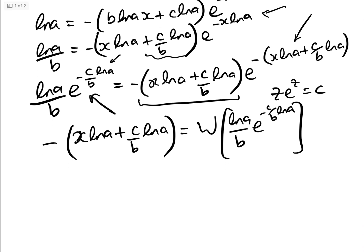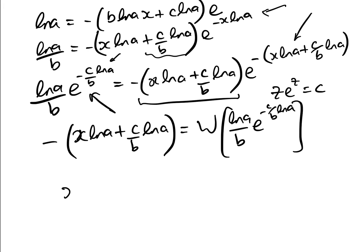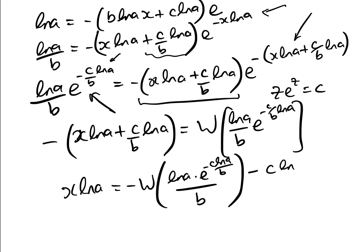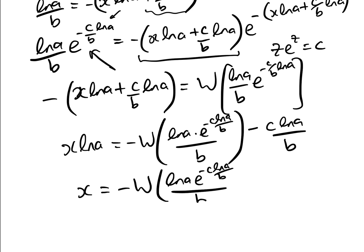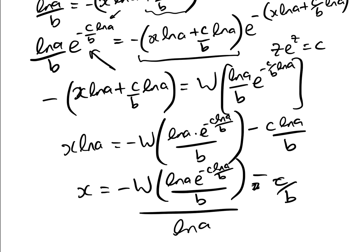We can simply read off our answer because we've got it in the form z e to the z equals c. Therefore, minus brackets x log a plus c over b log a equals W of log a over b times e to the minus c over b log a. Getting rid of the minus sign and dividing by log a, our answer is x equals minus W of log a times e to the minus c log a over b, all over b, divided by log a, minus c over b — since the log a cancels.